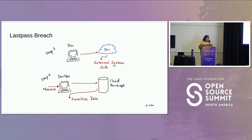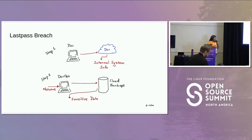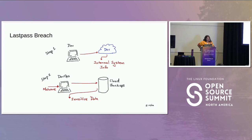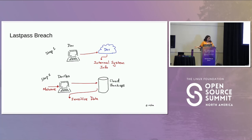Step two: attacker injects malware into a senior DevOps engineer's laptop. That senior DevOps engineer has keys to the kingdom — the attacker uses those keys to go to cloud backups and cloud backup data stores, and exfiltrates all of the sensitive data. What's sad about the LastPass breach is that they didn't actually share that much about exactly what happened, and we're still learning things about it. It turns out LastPass does not encrypt all of the vault — it only encrypts passwords; websites remain unencrypted, and that was in the cloud backups.